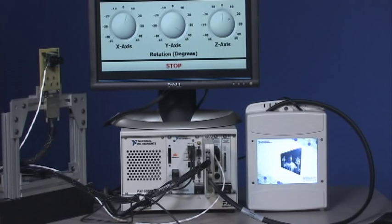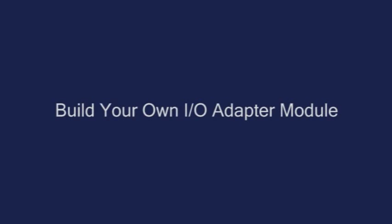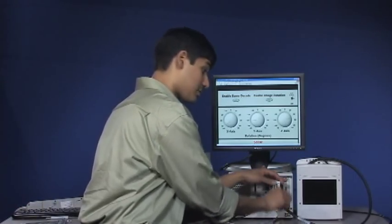In fact, on this particular FPGA chip, we're doing over 40 million matrix multiplies per second. Now, this particular high-speed digital adapter module is something that you could purchase from National Instruments.